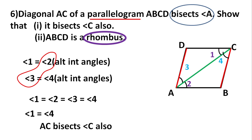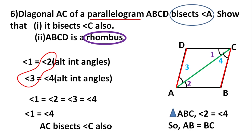In triangle ABC, we need to prove AB equals BC. We know angle 2 equals angle 4, and if two angles are equal, the sides opposite to those equal angles are also equal — that's the isosceles triangle property. So AB equals BC. That means ABCD is a rhombus. The first question is complete. Hope you got the concept.